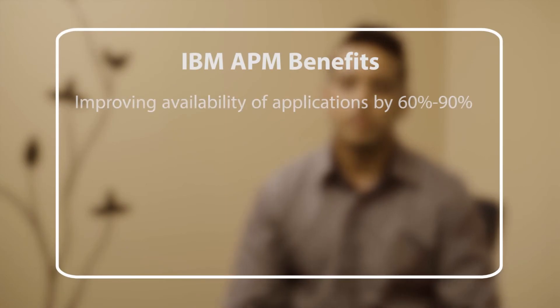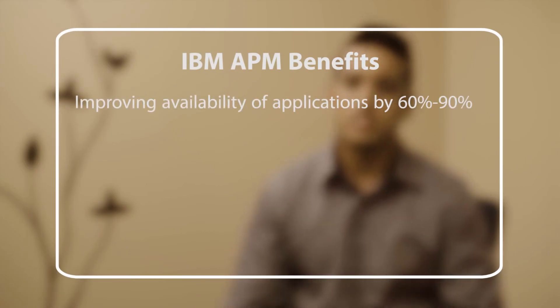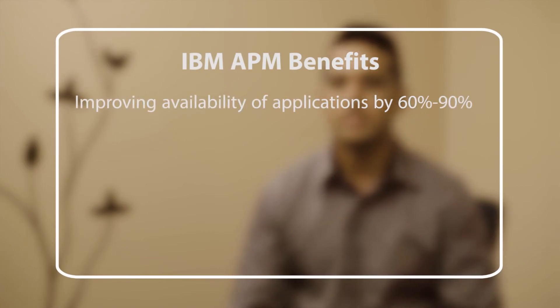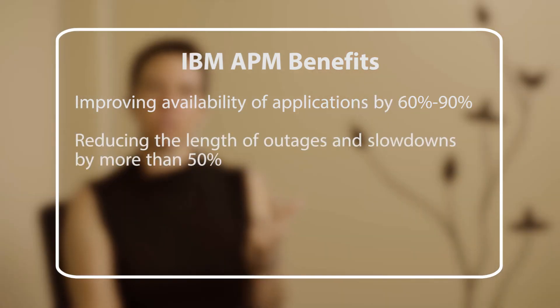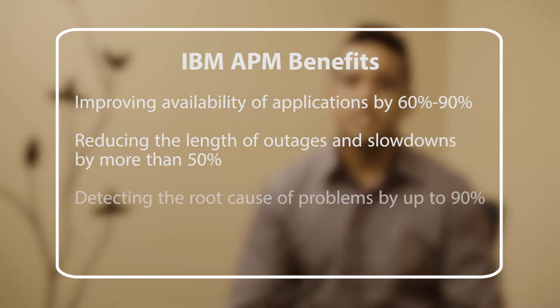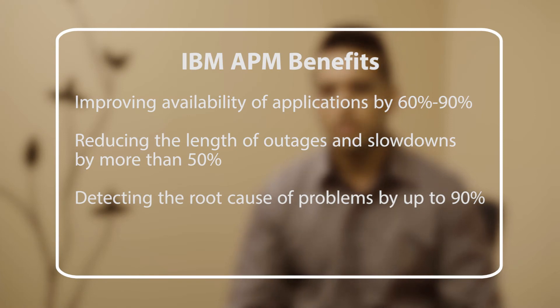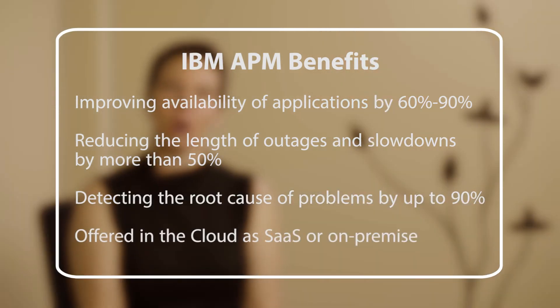IBM APM can help you improve your environment by improving availability of applications by 60-90% using integrated analytics, reducing the length of outages and slowdowns by more than 50%, and detecting the root cause of problems by upwards of 90%. What's more, it can be offered either in the cloud as a Software as a Service offering, or on-premise.